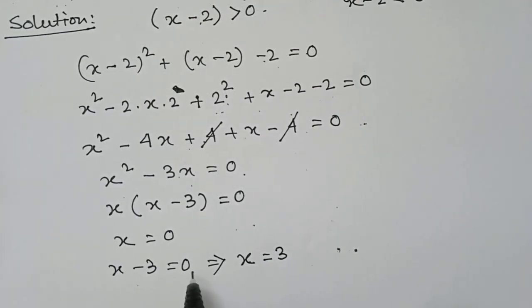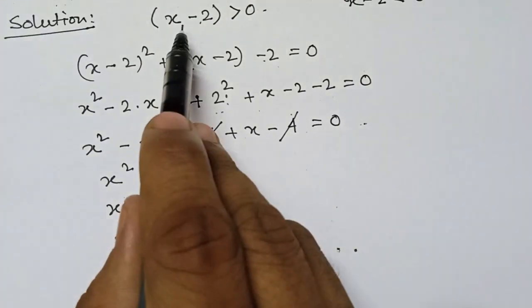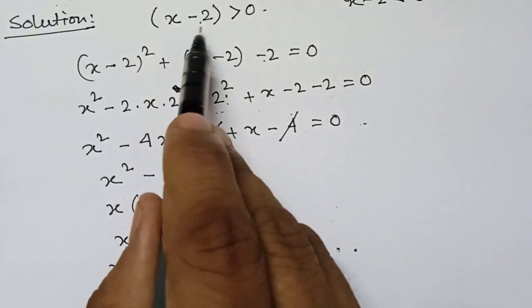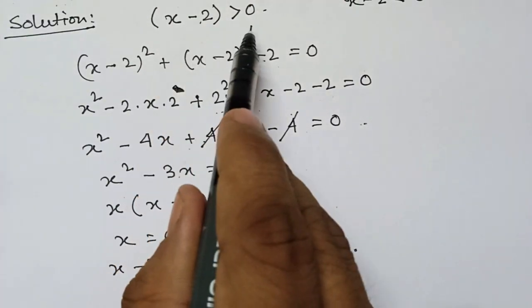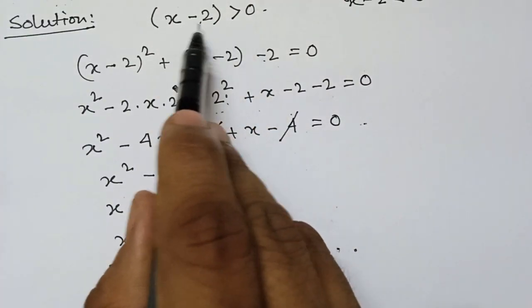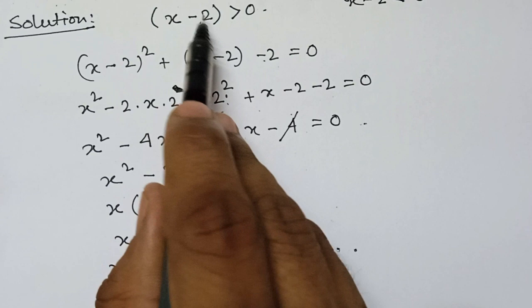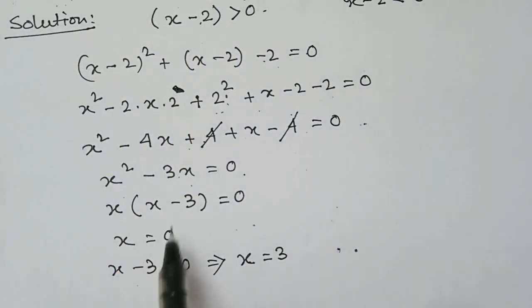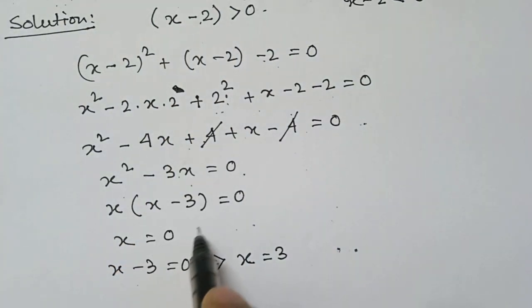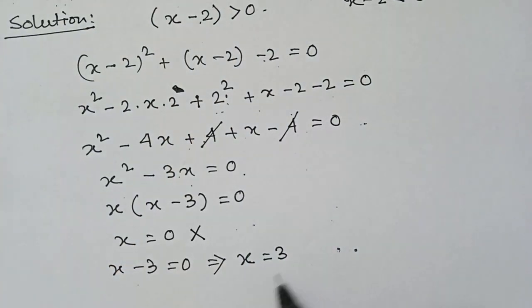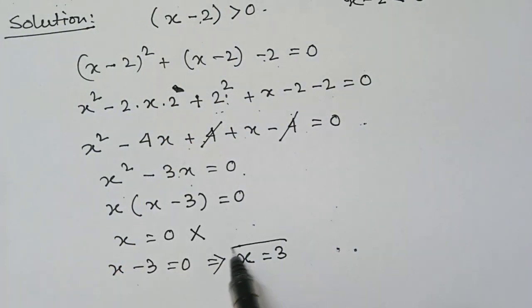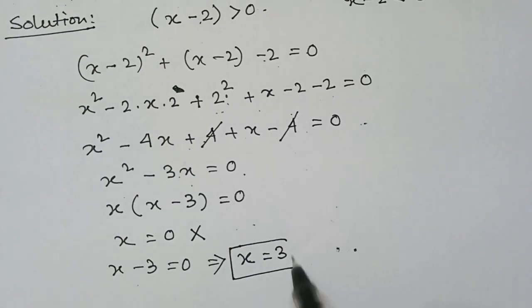Now we have already considered that x minus 2 is greater than 0, which means x is greater than 2. So if x is greater than 2, then x equals 0 is not an answer, and x equals 3 will be the answer.